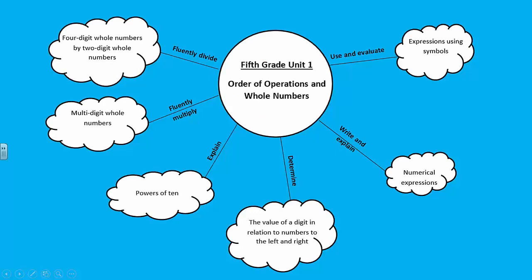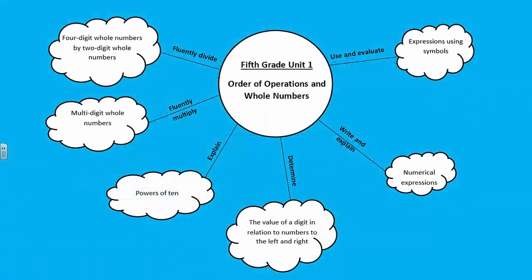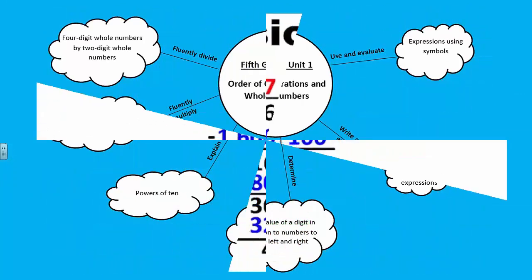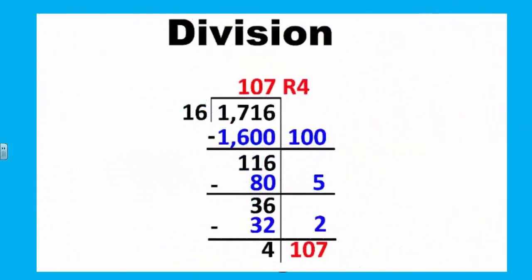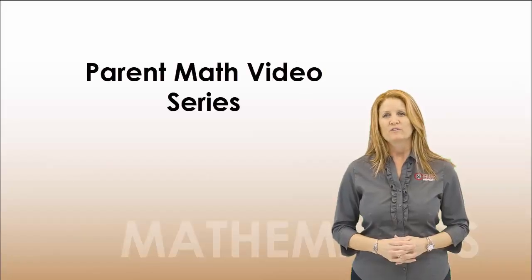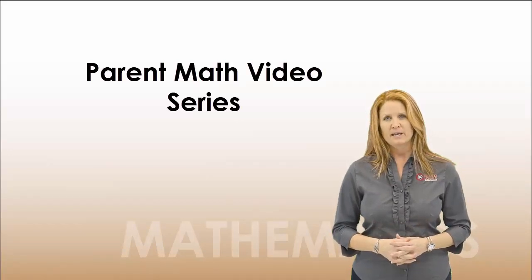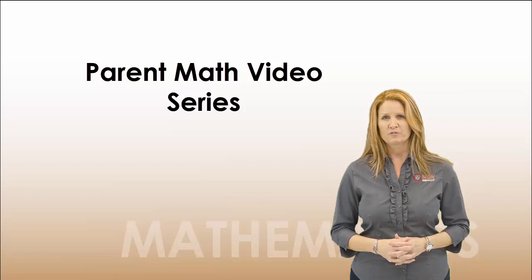In this unit, students use and evaluate expressions using symbols, write and explain numerical expressions, determine the value of a digit in relation to numbers to the left and right, explain powers of 10, fluently multiply multi-digit whole numbers, and fluently divide 4-digit whole numbers by 2-digit whole numbers. Thank you for your time. We know that when families and schools work together, student success increases. Please visit the Cobb County Math Department website for additional information and resources to support your student at home.